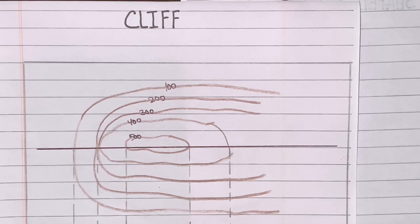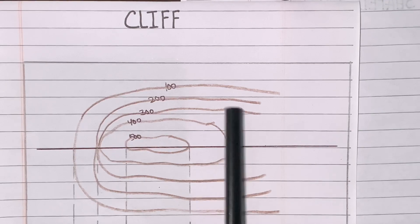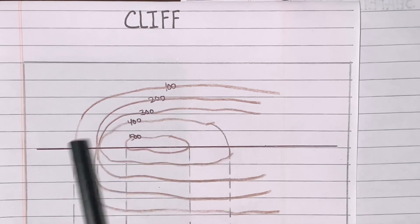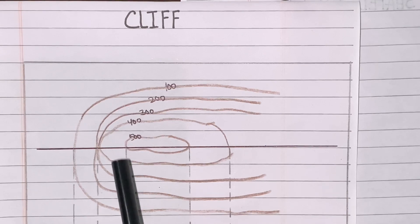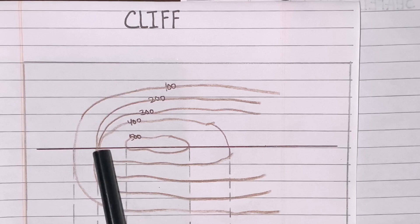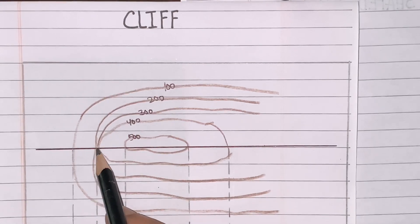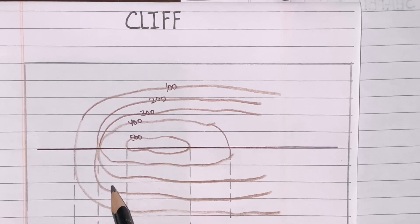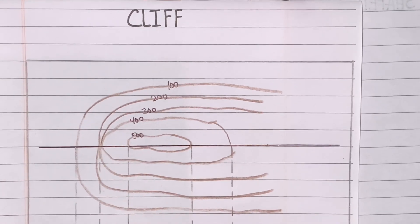In a topographical map, a cliff is shown like this. Here you will notice that contour lines are very close to each other and they merge at one point. You can see all the contour lines merging at this point. This indicates a cliff in topographical maps.